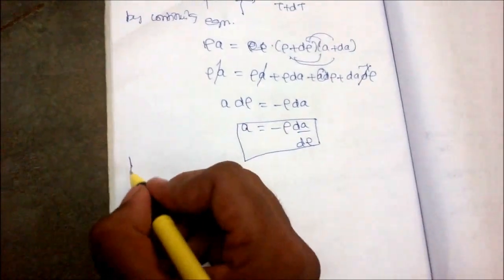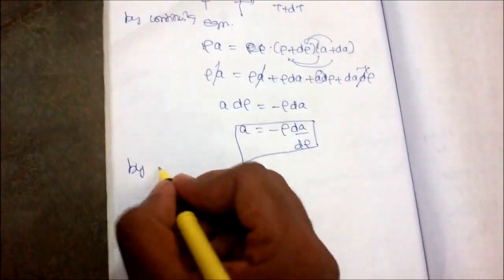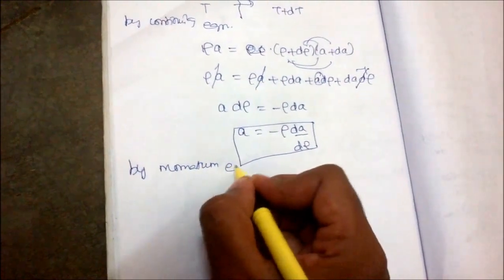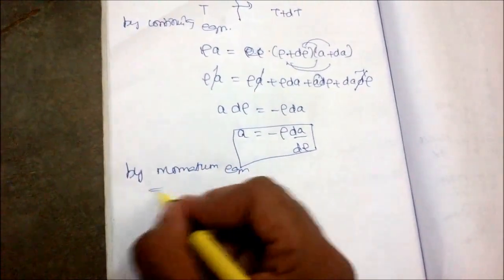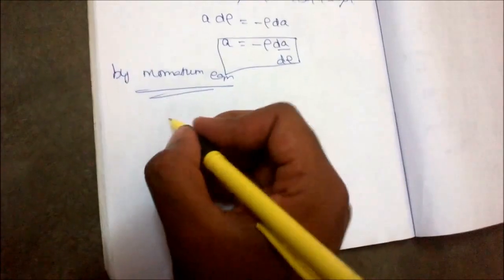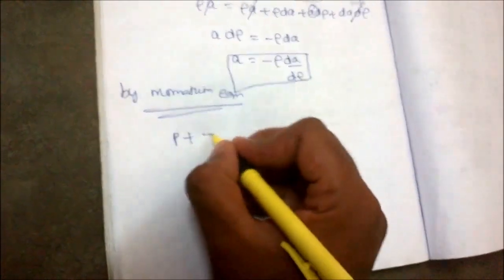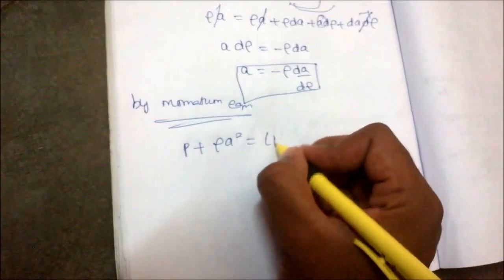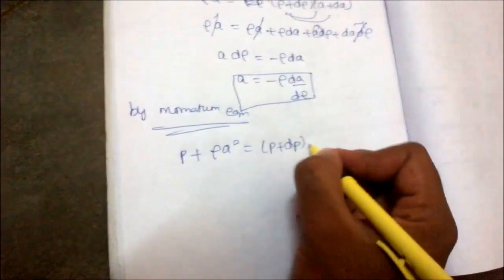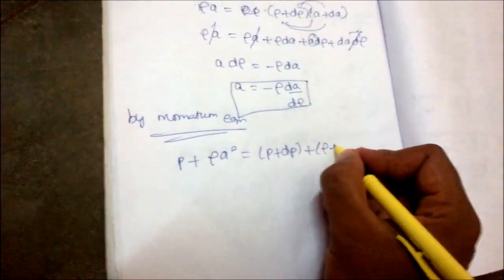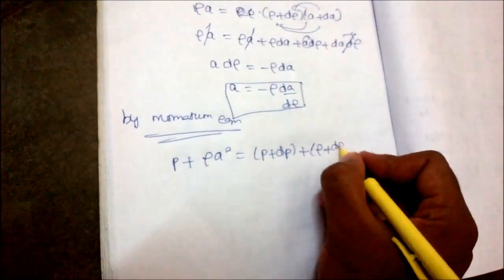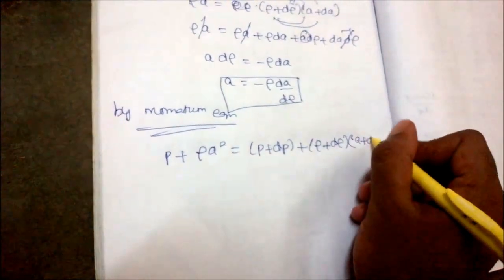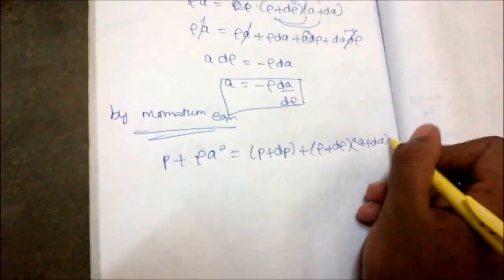By the momentum equation: P + ρA² = (P+dP) + (ρ+dρ)(A+dA)², the whole square expanded.